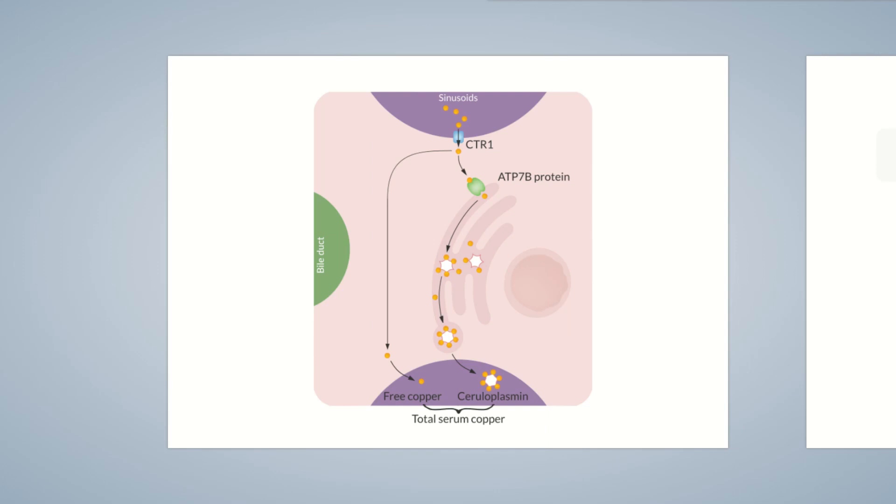In addition to providing the body with copper, hepatocytes have the important task of eliminating excess copper from the body. The copper that's no longer needed is transported from the Golgi apparatus to the bile ducts and vesicles. Subsequently, copper can be excreted into the bile and eliminated from the body.